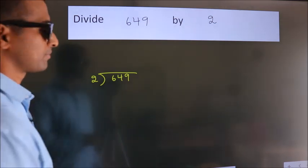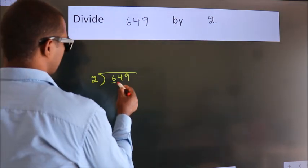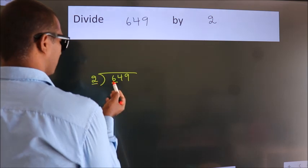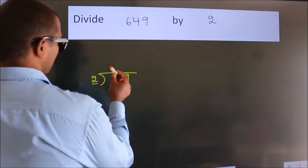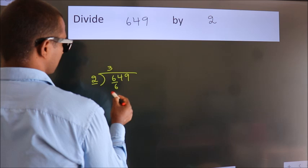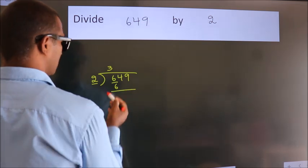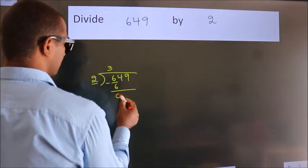Next, here we have 6, here 2. When do we get 6? In the 2 table, 2 times 3 is 6. Now we should subtract. We get 0.